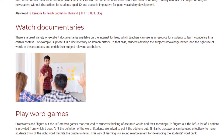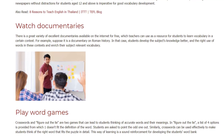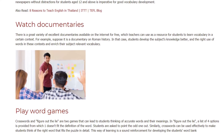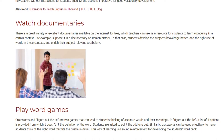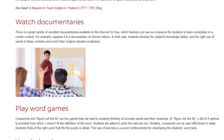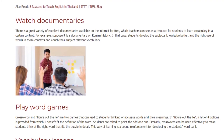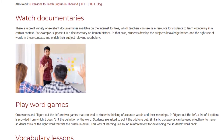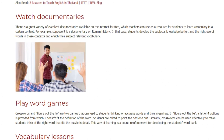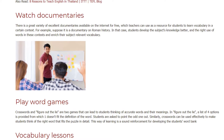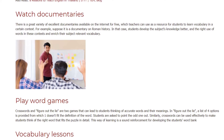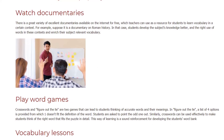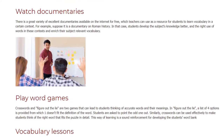Play word games. Crosswords and 'Figure Out the Lie' are two games that can lead students to think of accurate words and their meanings. In 'Figure Out the Lie,' a list of four options is provided from which one doesn't fit the definition of the word, and students are asked to point out the odd one.